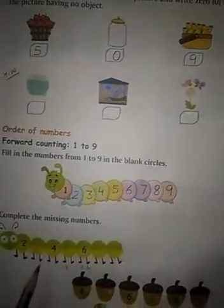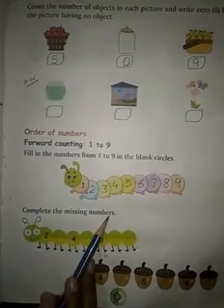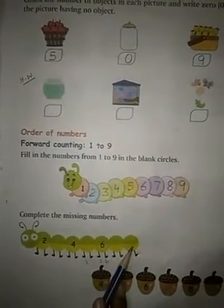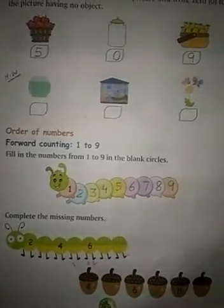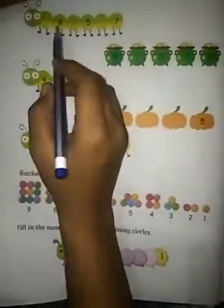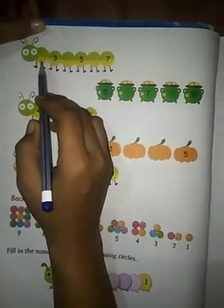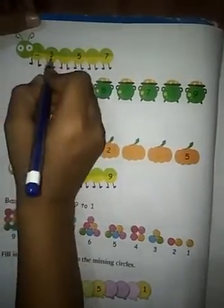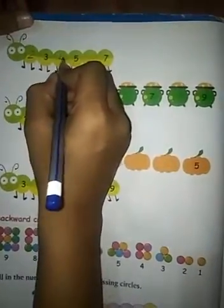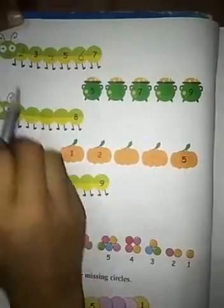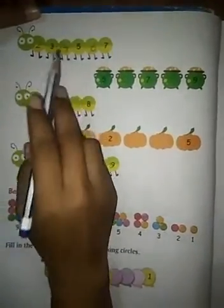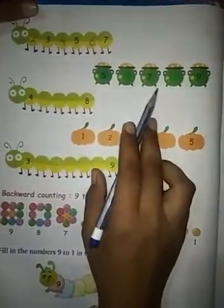Like this, you have to write. Now here complete the missing numbers — some numbers are missing, you have to write those numbers. Now see page number 28. Before 3, what number will come? 2. And after 3? 4. After 5? 6. That's how I have written the missing numbers.